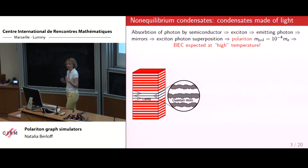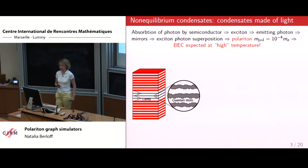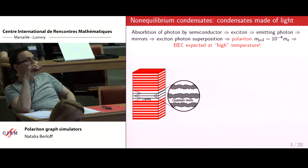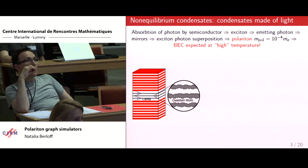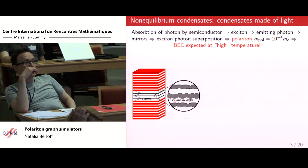It's a quasi-particle — a particle in the sense that it has an effective mass. We can talk about momenta and densities of these particles like other natural atoms or molecules. It's a half-light, half-matter particle: due to its excitonic component it is matter, and due to its photonic component it is light. It's four to five orders of magnitude lighter than an electron. As we know, the Bose-Einstein condensation temperature is inversely proportional to the mass of the particle.